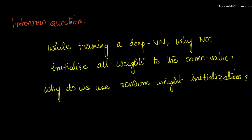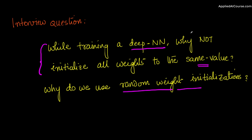Here is a very interesting interview question related to deep neural networks and back propagation. While training a deep neural network, why not initialize all the weights to the same value? We clearly explained in the course videos that we do random weight initialization, and we also discussed what happens if you initialize all the weights to the same constant value. I prefer asking these hard 'why' questions because it is only through understanding why something is done that we understand the concept in depth.